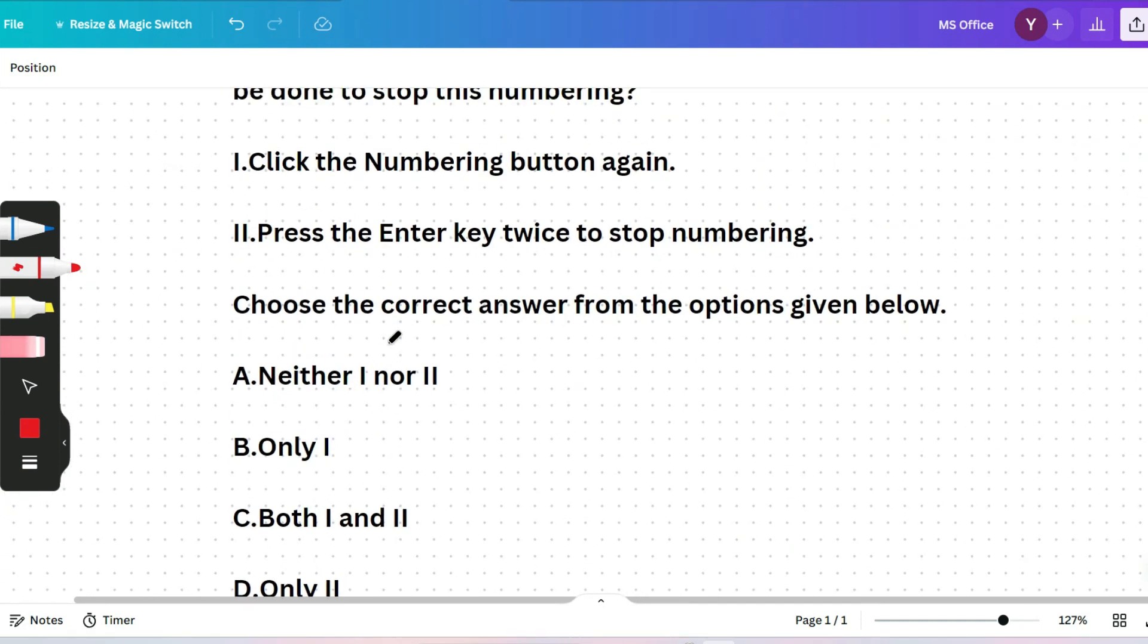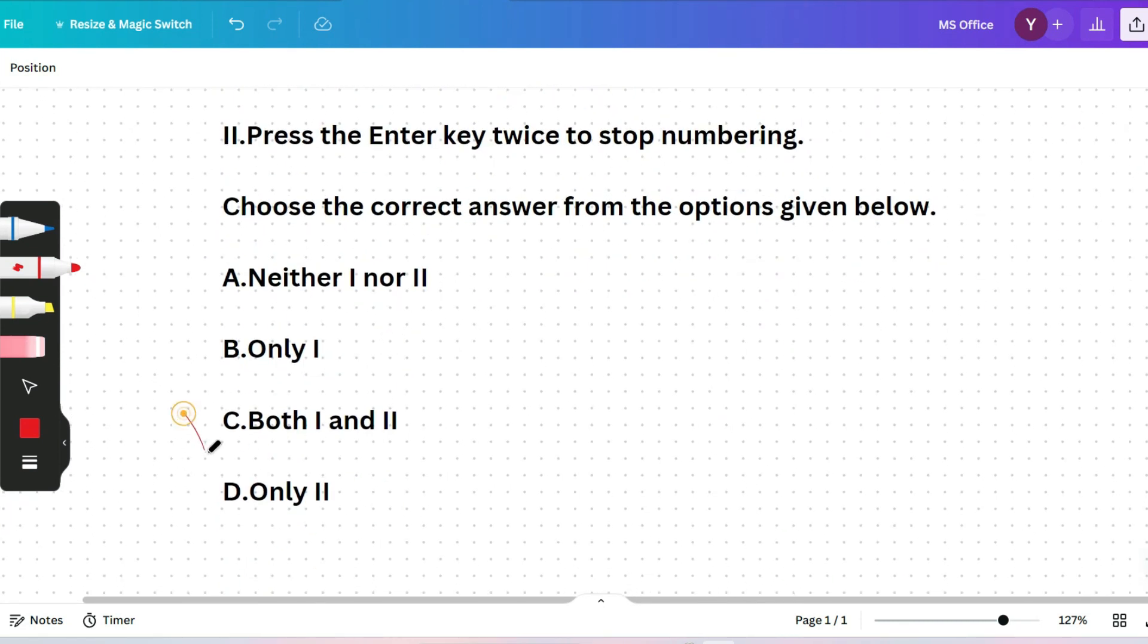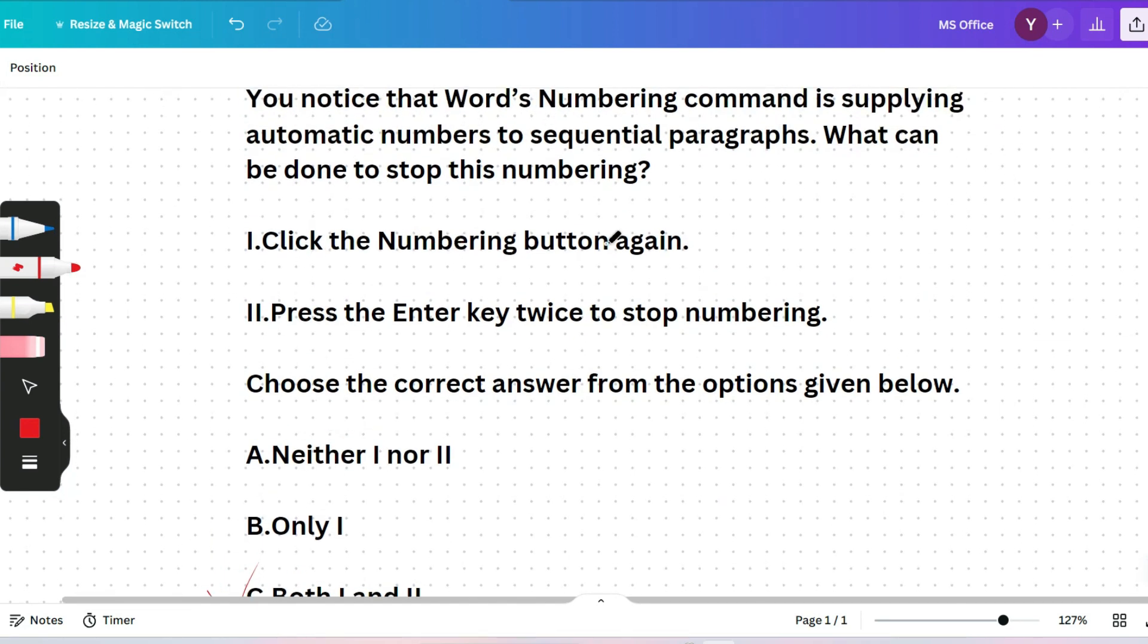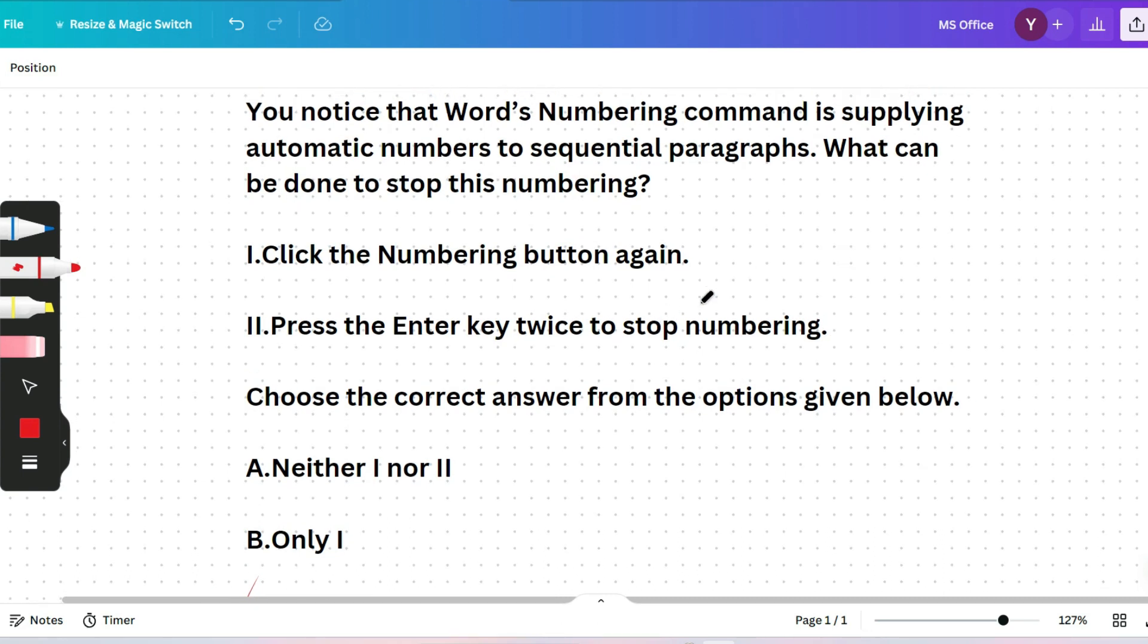I hope by now you have pointed out the correct answer. The correct answer will be both one and two. You have to click the numbering button again and you have to press the Enter key twice to stop the numbering. This is the feature that you can use to stop the numbering.